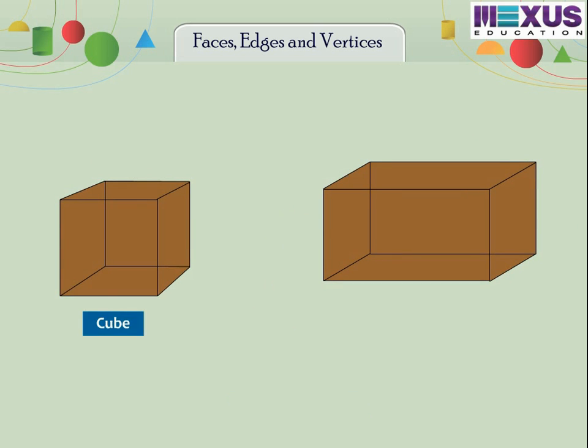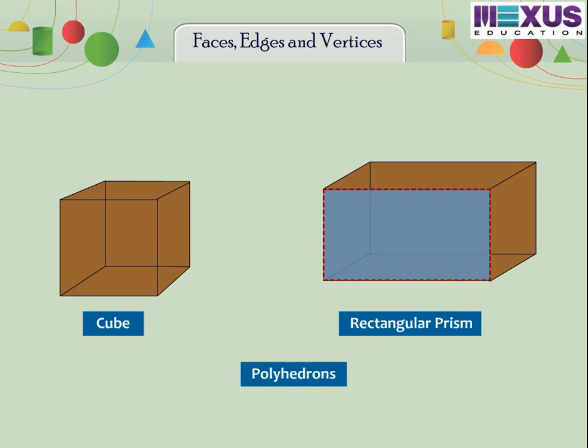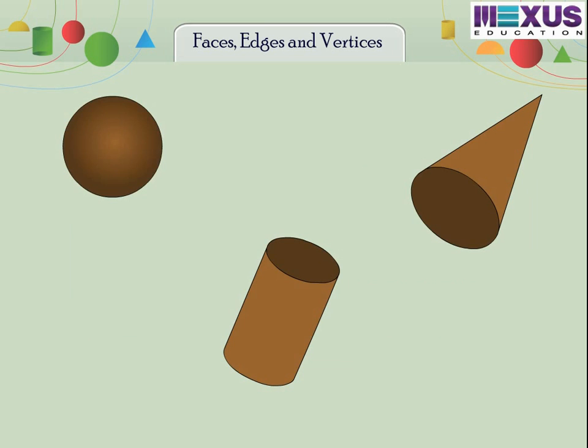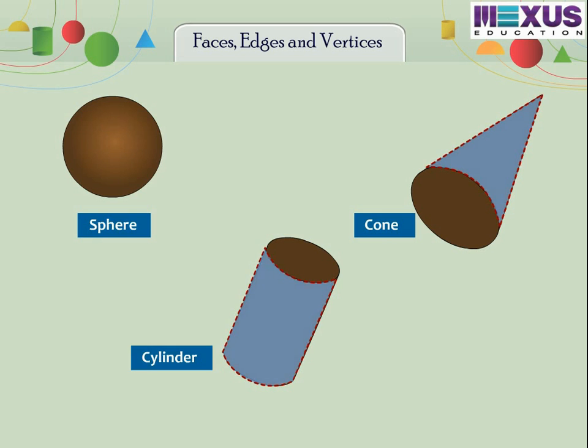The faces of cubes are squares. The faces of rectangular prism are rectangles. Hence, these solids are polyhedrons. The surface of sphere is curved. The surface of cone and cylinder is lateral. Hence, they are called non-polyhedrons.